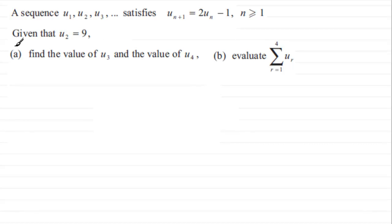And in part (a) we've got to find the value of the third term in the sequence u₃ and the value of the fourth term u₄, and then we've got to go on in part (b) to evaluate the sum sigma of the first four terms, r going from 1 to 4 of u_r.